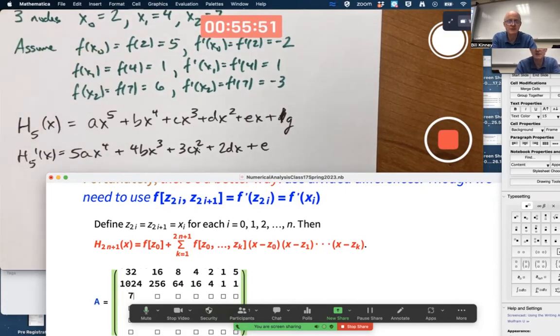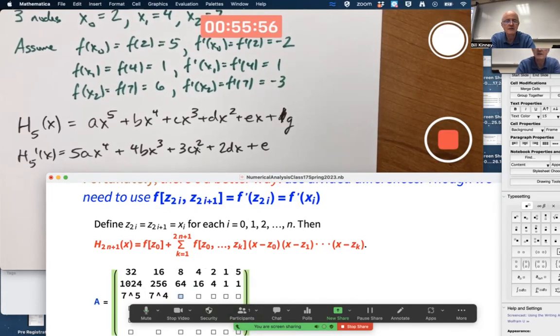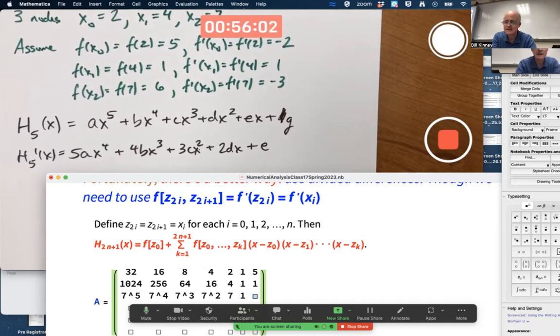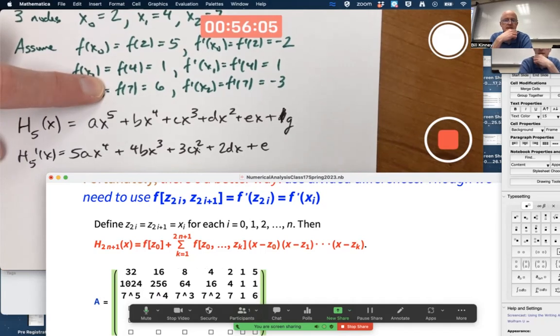Seven higher powers. Let's just do this. Seven to the fifth power, seven to the fourth power, seven cubed, seven squared, seven, one, six, right? Because I want F of seven to equal six.